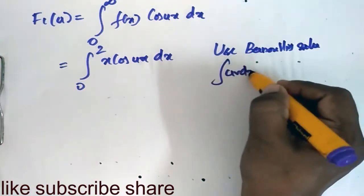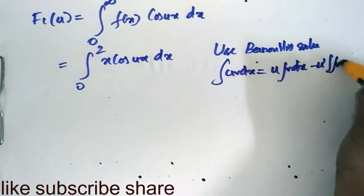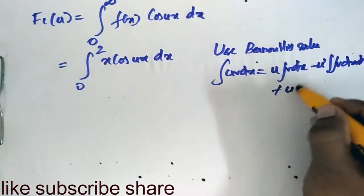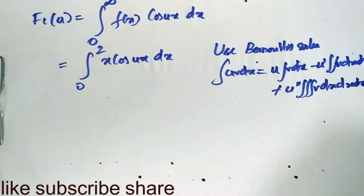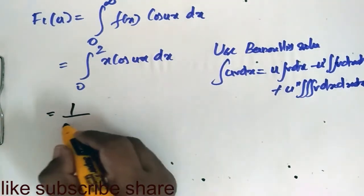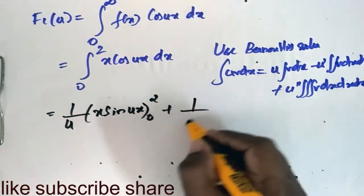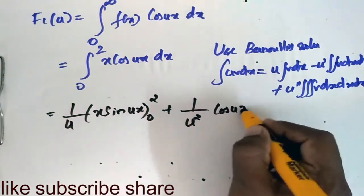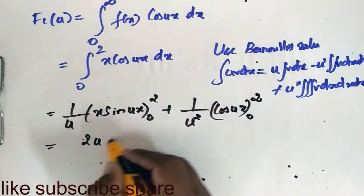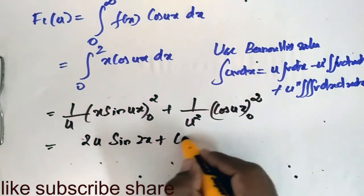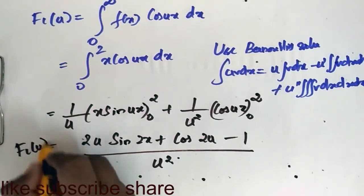Applying Bernoulli's rule: integral u·v dx equals u integral v dx minus u' double integral v dx dx plus u'' triple integral v dx dx dx, and so on. This gives 1/u into x·sin(ux) from 0 to 2, plus 1/u²·cos(ux) from 0 to 2, which simplifies to 2/u·sin(2u) plus (cos(2u) minus 1)/u². This is fc(u).